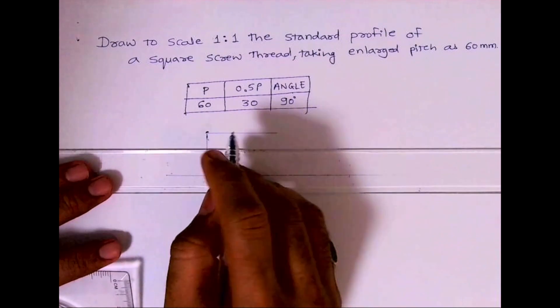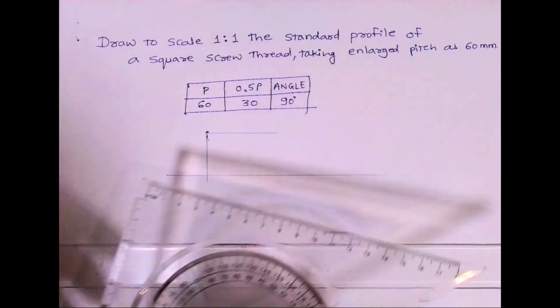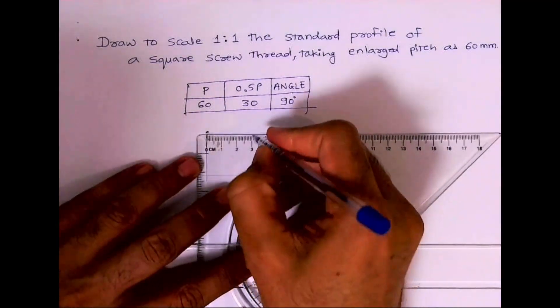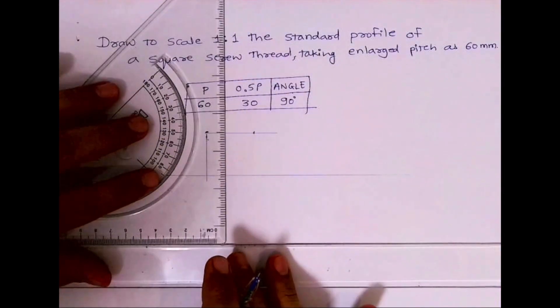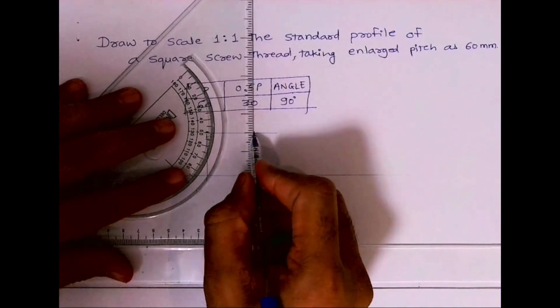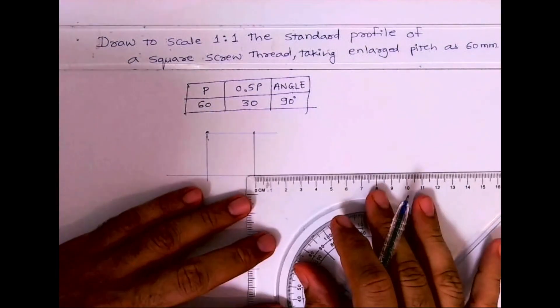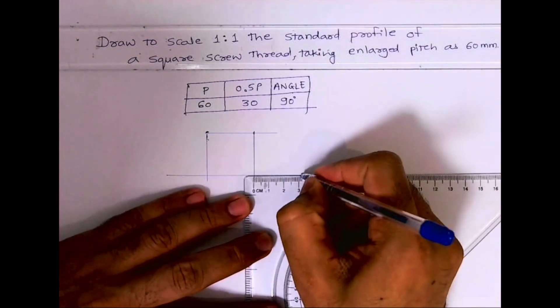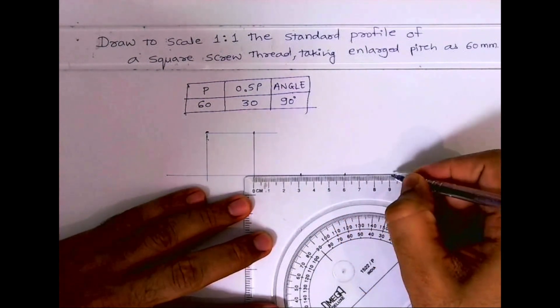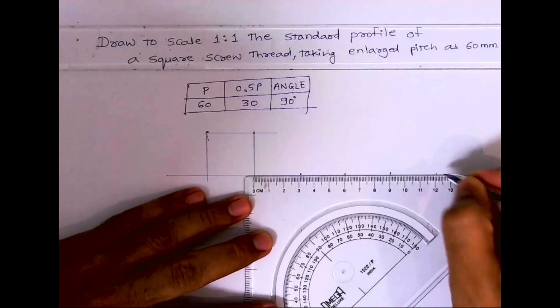Then draw a horizontal line, this will also be 30. Mark 30, 30, 30, 30.